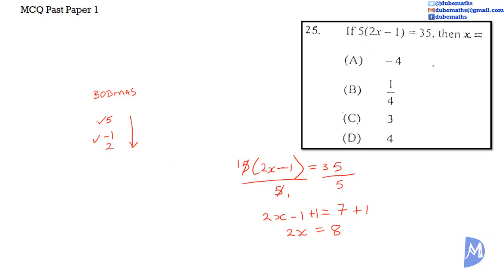Now we're going to remove the 2. 2 has been multiplied by x, so we're going to divide by 2 on both sides. 2s cancel. So we remain with x. And 8 divided by 2 is equal to 4. Thus, the answer is D.